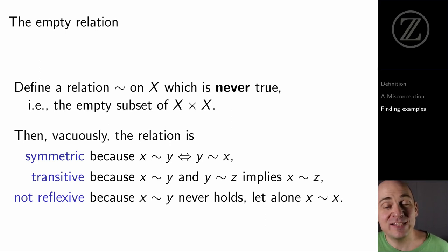Similarly, for transitivity, transitivity is also a conditional statement and the hypothesis that x tilde y and y tilde z, that never happens. And consequently, it doesn't matter what the conclusion is. But nevertheless, transitivity is true. It's vacuously true because the hypothesis never happens.